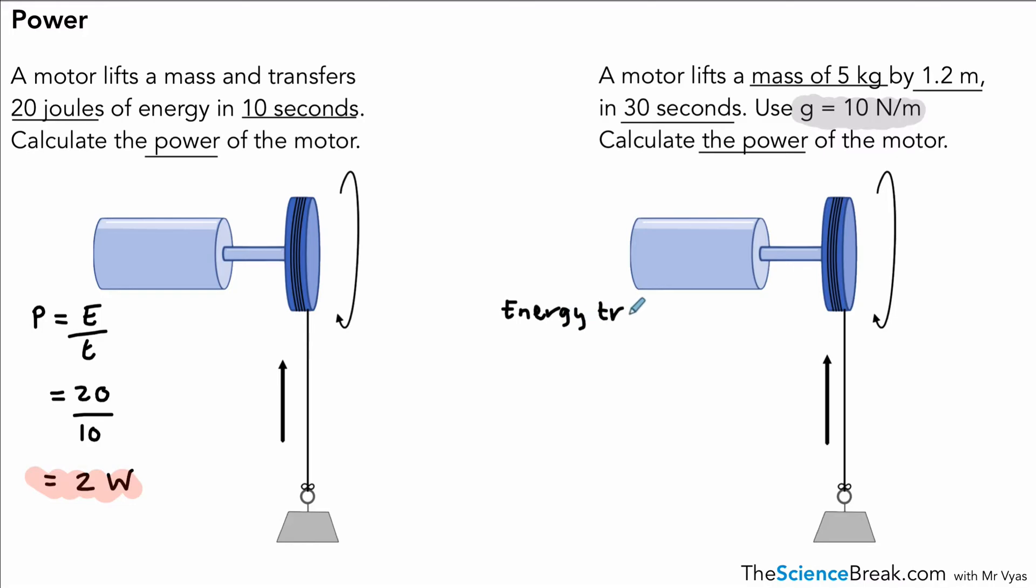How do we work out the energy transferred? Well, in our question we have a mass, we have a height, and we have g, so that will prompt you to remember the gravitational potential energy equation, GPE, which is m times g times h. In this case it will be 5 times 10 times 1.2 meters. We work that out, that gives us 60 joules. So here we have our energy transferred. Once we have our energy transferred, power is energy transferred over time: 60 divided by 30, which is 2 watts.